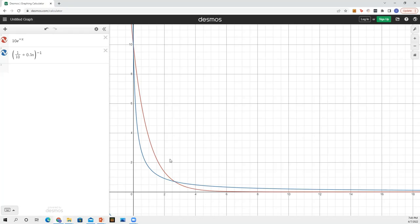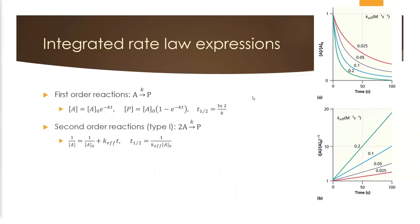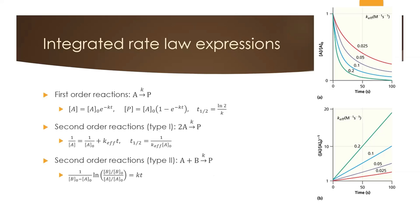The balanced chemical reaction has nothing to do with the rate law — we must determine it experimentally every time. For second-order reactions of type 2, when we have two different reactants A and B rather than 2A, the integrated rate law is more complicated because of the two different initial concentrations, but it follows the same general pattern.